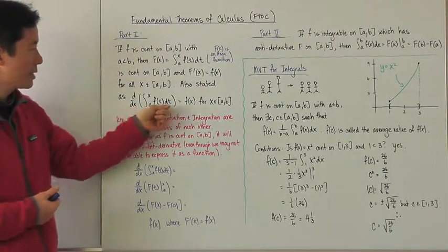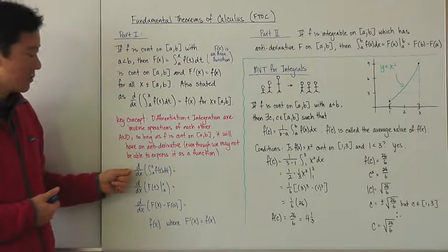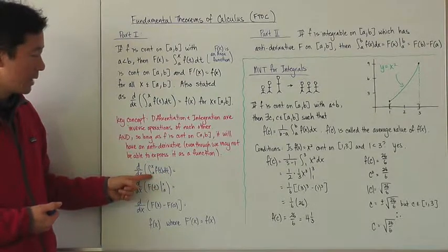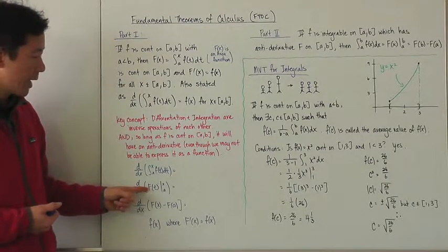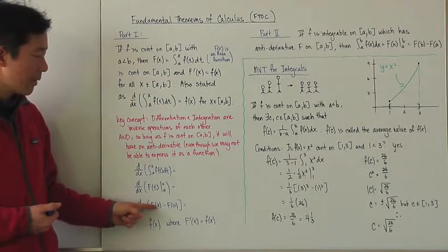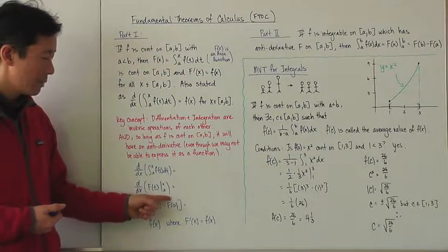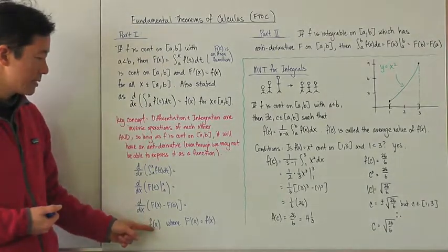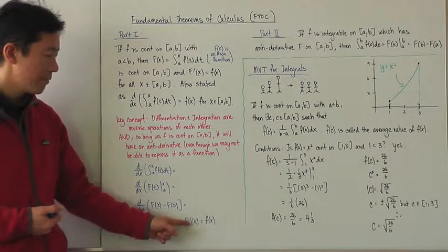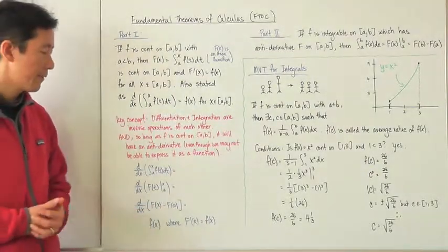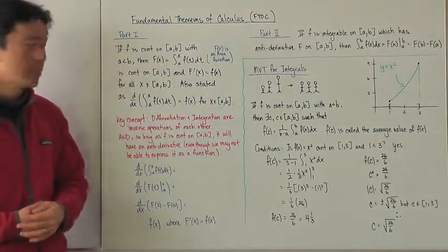I want to just very quickly show how this is true. If we follow the order of operations here, what we have to do first is apply the definite integral. We know we're coming out with an antiderivative of capital F of t evaluated from a to x, which then becomes capital F of x minus capital F of a. Remember that this part right over here is just going to be a number. And so what we come up with then is f of x, where the derivative of capital F of x is equal to f of x. So hopefully that makes sense now, and hopefully part one is very clear.